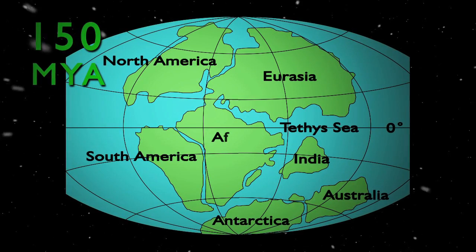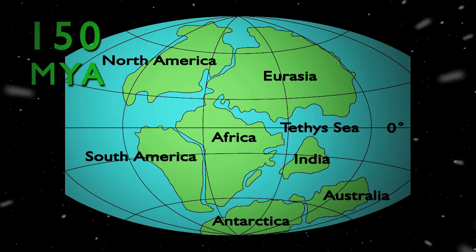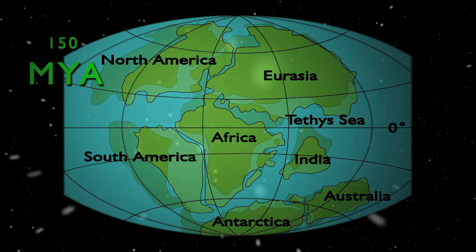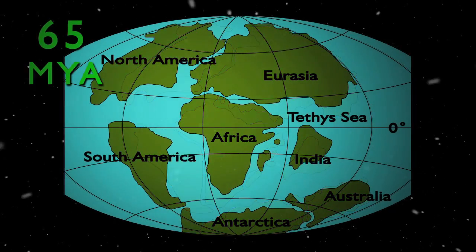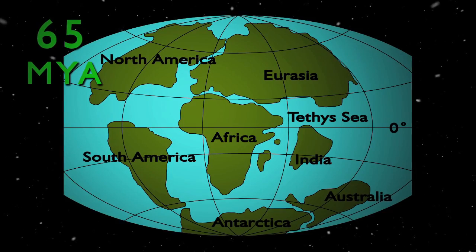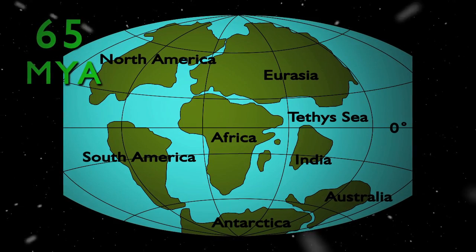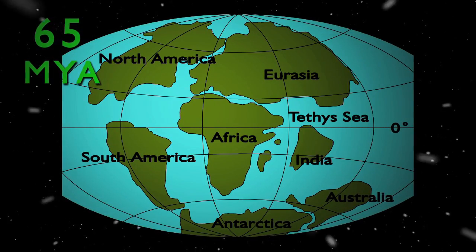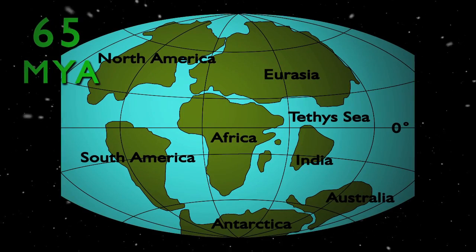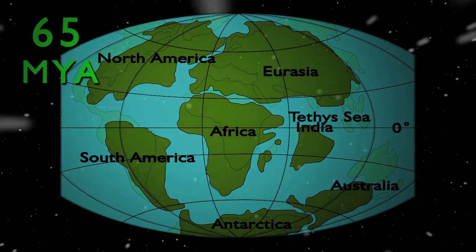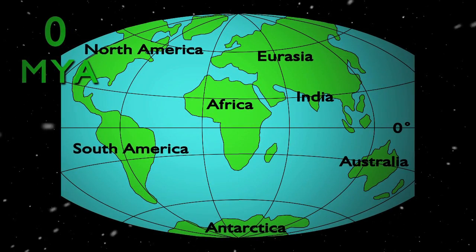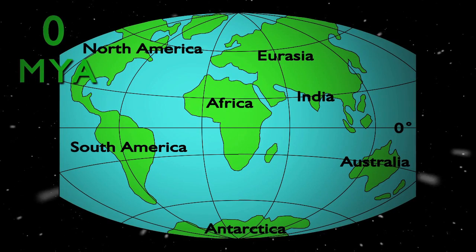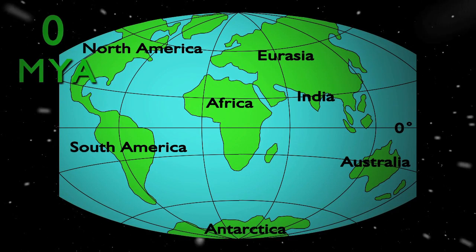By the 65 million year mark, at the time of the asteroid strike theorized to have caused the demise of the dinosaurs, the Earth we know today was beginning to take shape. From 65 million years ago to the present, the surface of the Earth we recognize today took its form. But the tectonic plates of the Earth are still in motion, and millions of years in the future the surface of the Earth will again be very different.